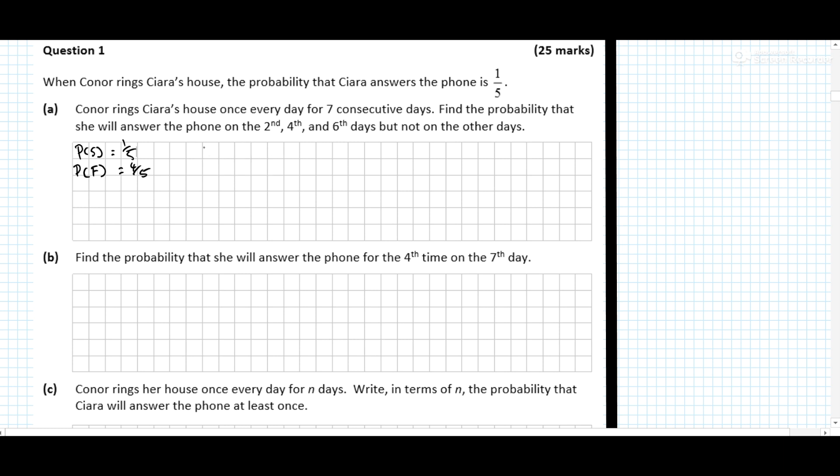So what we think of the question is, Conor rings Kira's house once every day for 7 consecutive days, find the probability that she will answer the phone on the 2nd, 4th and 6th day, so that's failure, success, failure, success, failure, success, failure, but not on the other days.